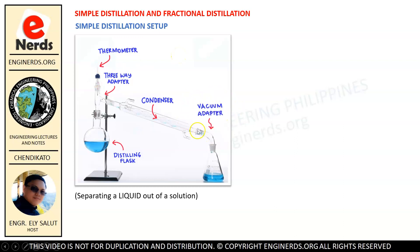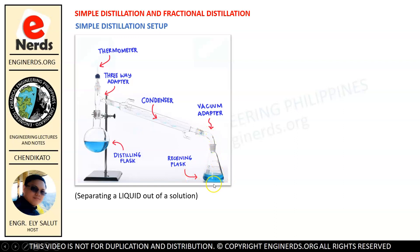We have a vacuum adapter in order to connect our condenser with our receiving flask. During the distillation process, the solution from our distilling flask will evaporate and pass through our condenser where it will be turned into a liquid form and will be collected in our receiving flask.